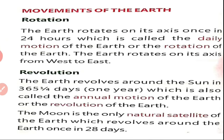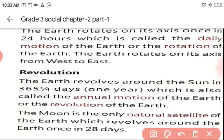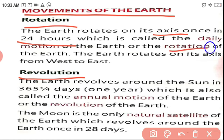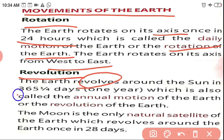Now, rotation and revolution — we already read about these in the first lesson. The two movements of the earth are rotation and revolution. Rotation is when the earth rotates on its own axis, and it takes 24 hours. The direction is west to east. Revolution is when the earth revolves around the sun, and it takes 365 and a quarter days — nearly one year.